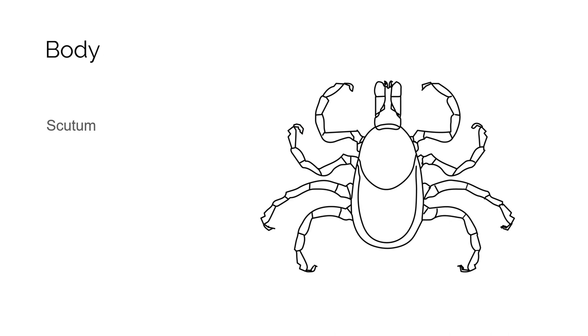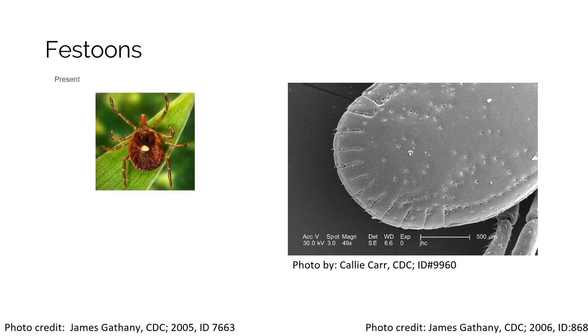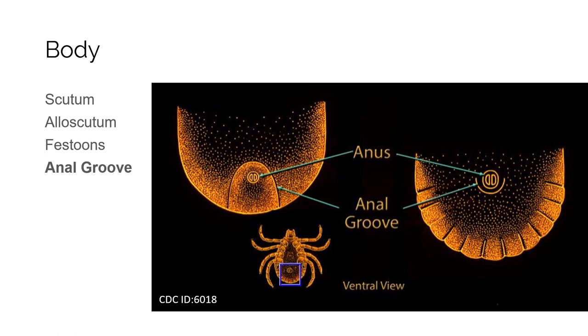Next is the alloscutum, the area of the body that expands as the tick feeds. Think about its proportion in relation to the scutum; this can be important for feeding signs that will be covered more in Module 3. Festoons are small areas separated by short grooves on the posterior dorsal surface of a tick's body. You would also want to count the number of festoons if they are present, as the number varies by species. Ixodes ticks are the only ones that do not have festoons. The anal groove is a small depression around the anus on the ventral surface of the tick. The groove may be below the anus or may extend around in front of the anus; Ixodes genus ticks are the only ones that have an anterior anal groove.